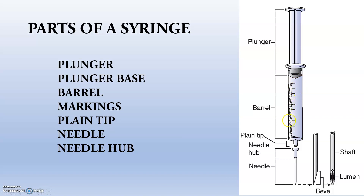So these are the markings on the barrel. This is actually the plain tip — in the case of some needles it will be in the perfect center, and in the case of some large needles it will be taken to the sides, towards the periphery. This is actually the needle hub, and this is the needle. We have done a video on needles, and I will be attaching the link in the description box — don't miss it.